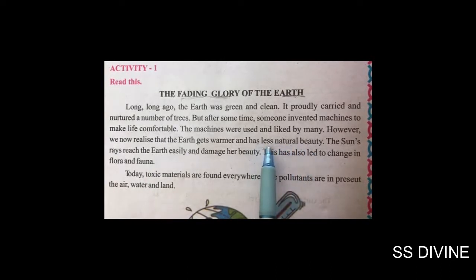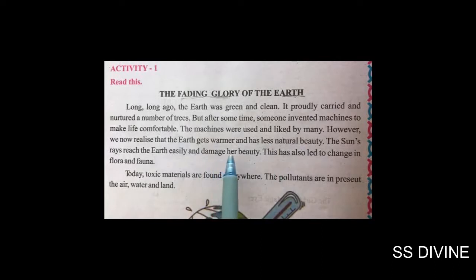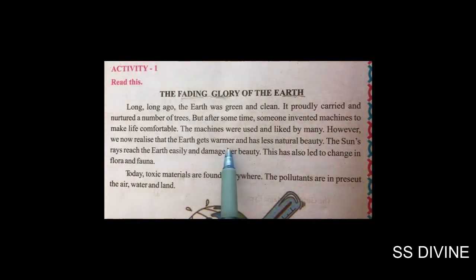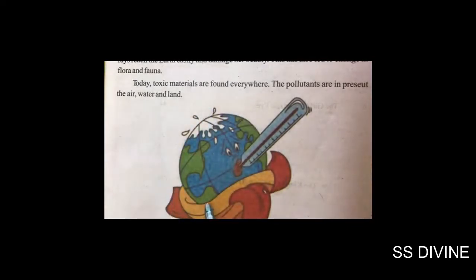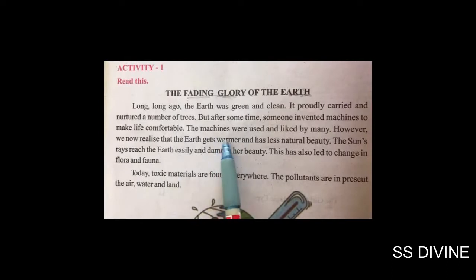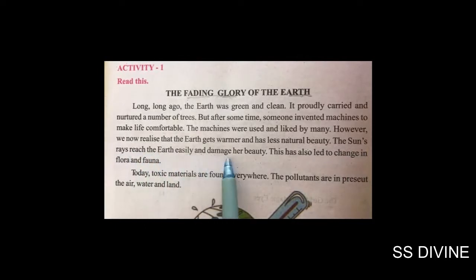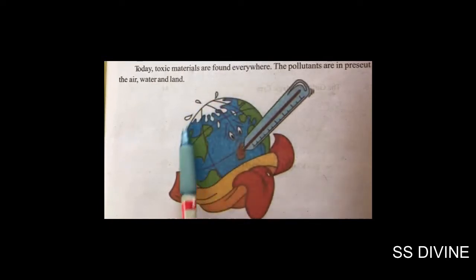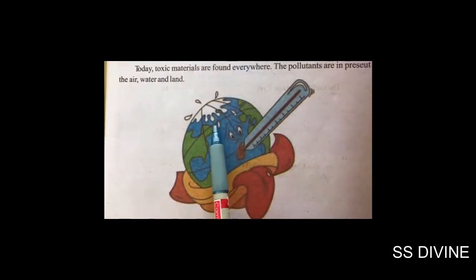जैसे जैसे machines use हो रहे हैं, वैसे वैसे Earth गरम हो रही है और natural beauty कम हो रही है। हम लोग vehicles यूज करते हैं petrol के साथ, तो petrol का धुआं atmosphere में जाता है, जिससे Earth के surrounding में temperature बढ़ता है। The sun's rays reach the Earth easily and damage her beauty — atmosphere damage हुआ है, और sun rays directly sun से Earth पर आते हैं।